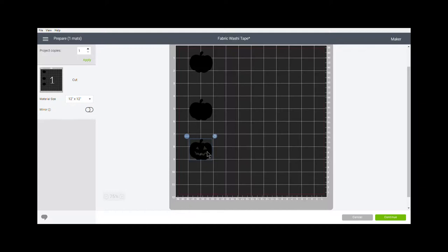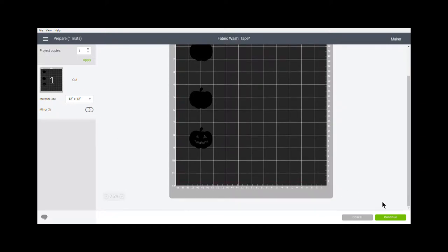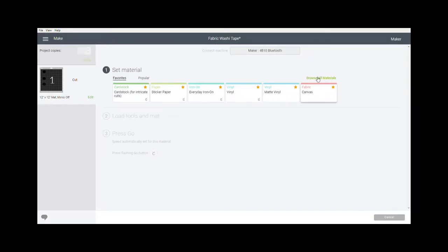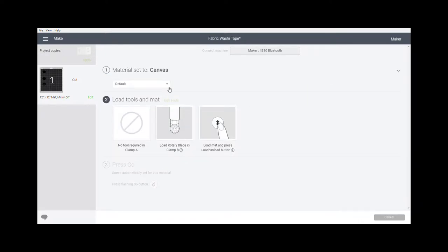Now typically I wouldn't use three different fabrics if I didn't have to, but this is just another way of doing it and I wanted to show that as well. We don't need a mirror or anything. So we say continue. We are going to choose canvas. You will need to browse all materials, go into fabric and find canvas. I've made it a favorite so it pops up here. I'm going to say more pressure. And I do not have my rotary blade in the clamp. So I am going to go do that right now and then press go.